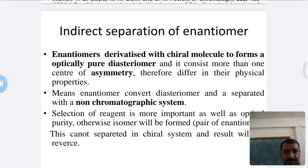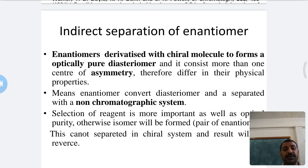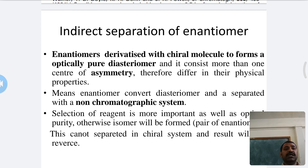In indirect separation, enantiomers are derivatized with chiral molecules to form optically pure diastereomers that contain more than one center of asymmetry. If the molecule has symmetry, it is chirally inactive, so the molecule must contain a center of asymmetry. The diastereomers formed differ in their physical properties and can then be separated.